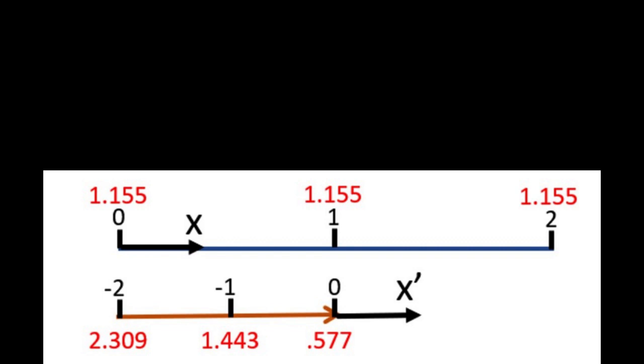We also know from gamma equals 2 that the time at the nose of the brown ship in the x-prime frame will be half of that time, but the time skewing remains the same on the x-prime frame. Those are trailing clocks, so plus 0.866 gets 1.443 and so on.